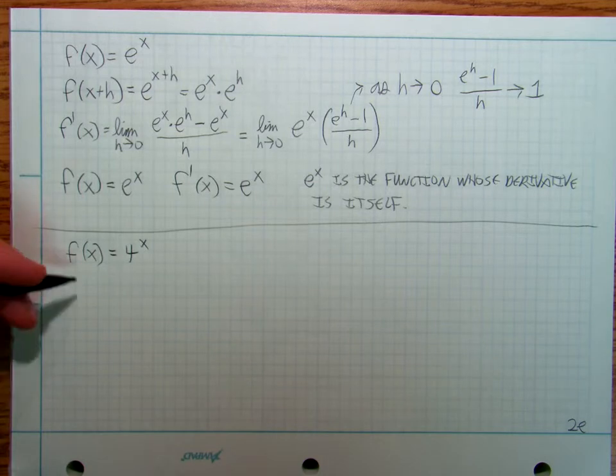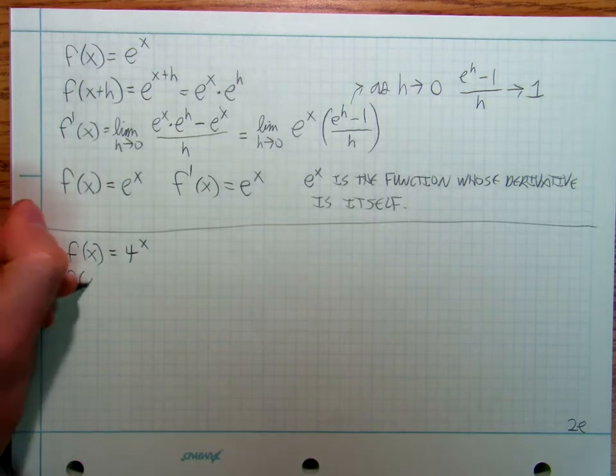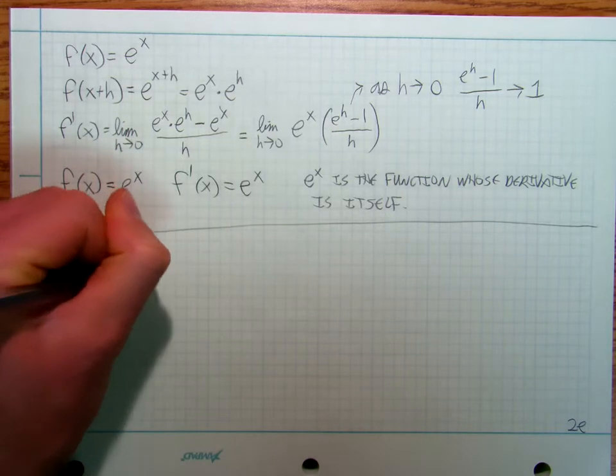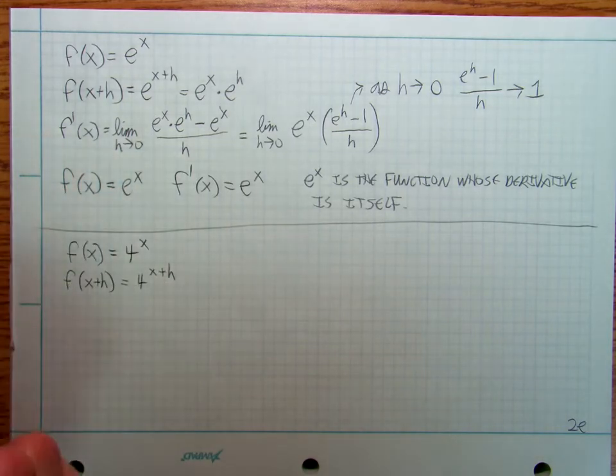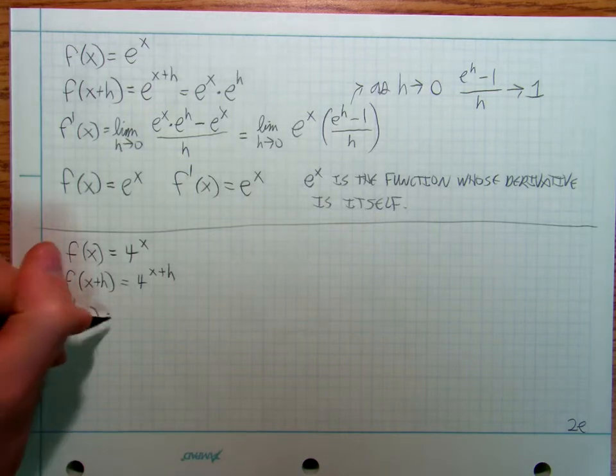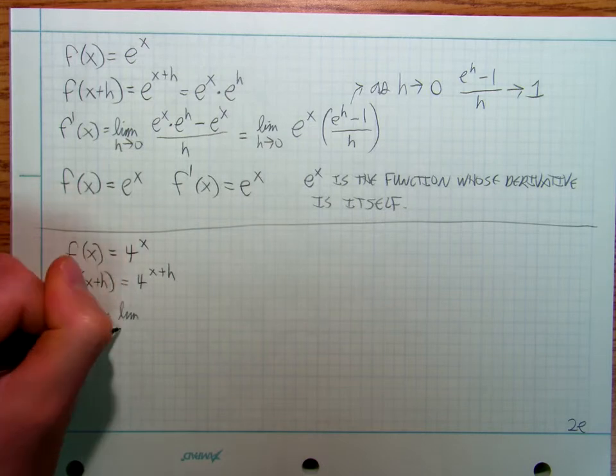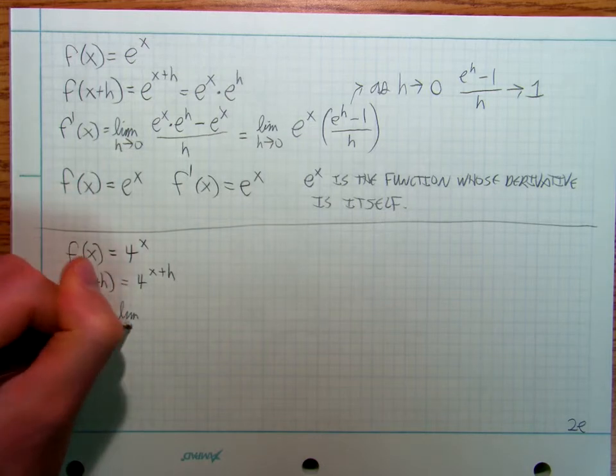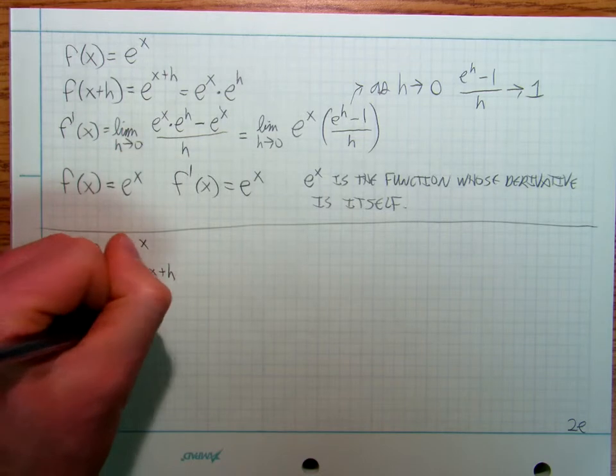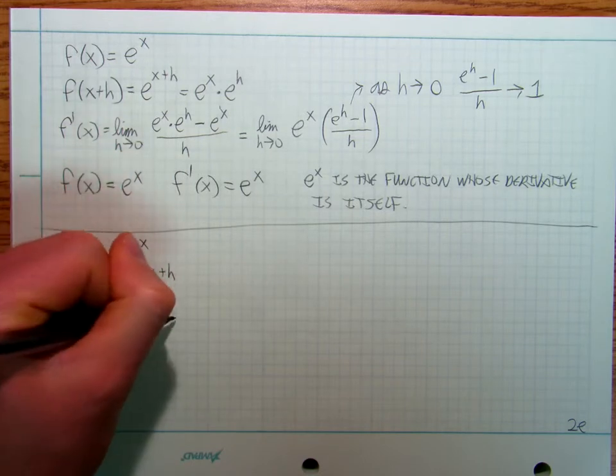You should do f(x+h) is equal to 4^(x+h). And then I'm going to say f'(x) is the limit as h approaches zero of 4^x times 4^h minus 4^x over h.